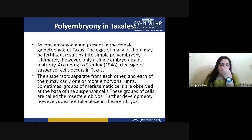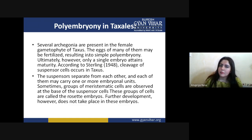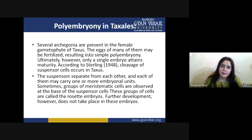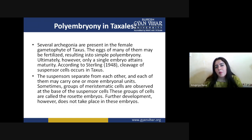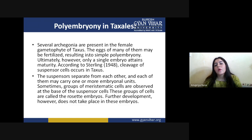In Taxus, the suspensors separate from each other and each carries one or more embryonal units. Sometimes groups of meristematic cells are observed at the base of the suspensors. These additional meristematic cells behave like fertilized cells and develop into embryos — at that time we call this the rosette type of polyembryony. So the Taxus group has both kinds of polyembryony: simple polyembryony in the first stage, and rosette polyembryony coming after, from the meristematic cells at the base of the suspensors.